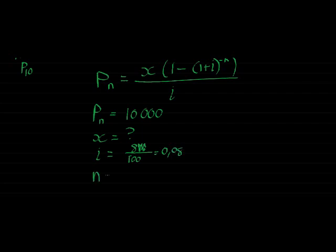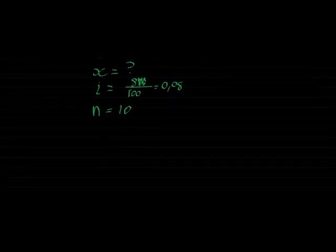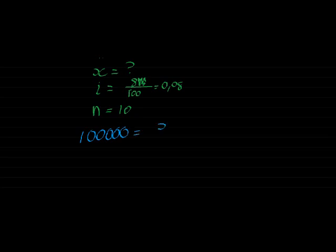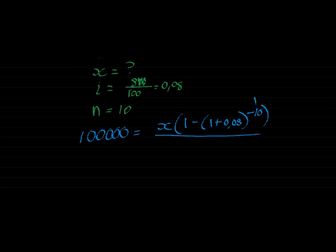And n is my number of payments — I'm going to make a total of 10 payments. We put this into our equation: P is replaced by 100,000, X is unknown. The formula gives us 1 minus (1 plus i = 0.08) to the power of negative 10, divided by i. The exponent is negative 10, representing how many payments I have left. My present value is 100,000 — that's how much I still owe — and I've got 10 payments left.